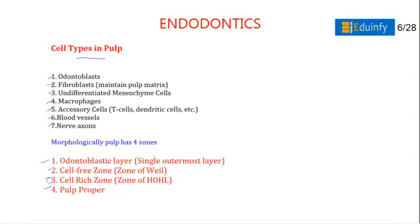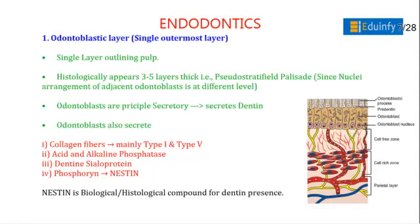The odontoblastic layer is a single layer outlining the pulp, which histologically appears 3 to 5 layers thick, showing pseudo-stratified appearance. Odontoblasts are the principal secretory cells; they secrete dentine and collagen fibers mainly of type 1 and type 5. They also secrete acid and alkaline phosphatase, dentine sialoprotein, and phosphophoryn — the latter being a histological marker compound for dentine.